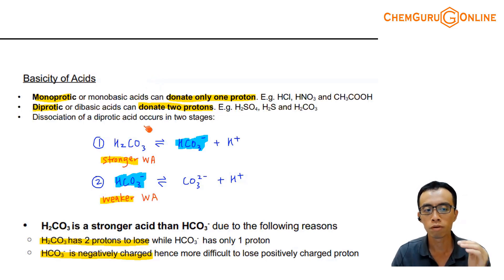Subsequently, when we deal with diprotec species, you notice how we handle it is we treat it as in stages. If I use H2CO3 as an example, it never dissociates two protons at once. It will dissociate one proton to give me HCO3- and H+. So therefore, this H2CO3 now becomes like a monoprotec acid.